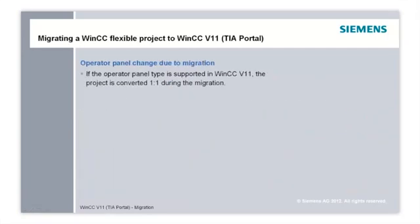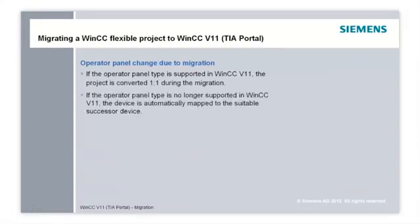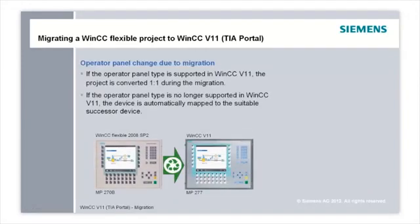What happens to an operator panel during migration? If the operator panel type in the WinCC Flexible project is also supported in WinCC version 11, the project is converted one-to-one during the migration. If the type of the operator panel to be migrated is no longer supported in WinCC version 11, the device is automatically mapped to the suitable successor device. In the displayed example, the MP270B is migrated to MP277K.